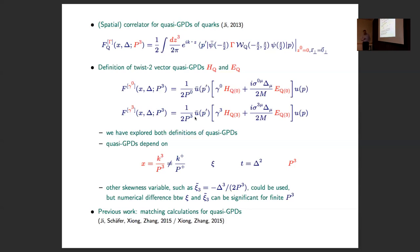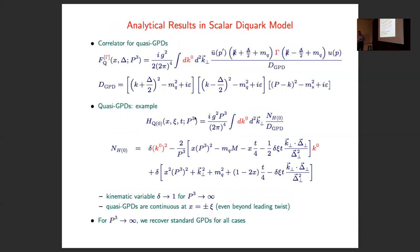The only thing done on quasi-GPDs before our simple model study were first works on the matching. On the analytical side, those familiar with this type of calculation will appreciate the results. This is the lowest non-trivial order expression in this model for the quasi-GPD correlator, with two quark propagator denominators and the spectator denominator in the numerator.